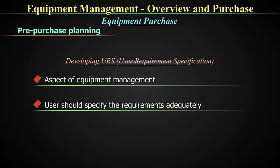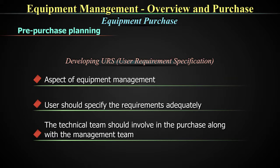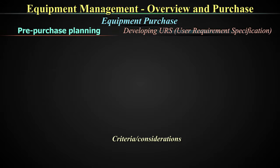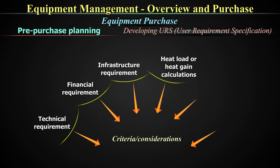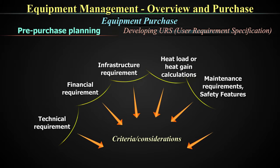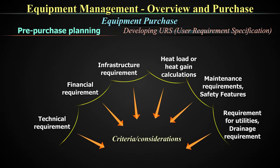How do you develop a URS or user requirement specification? Unless a user specifies requirements adequately, the optimization of its use is set to fail. It is imperative that the technical team of the lab is involved in this process. The relevant criteria when selecting and procuring laboratory equipment include technical, financial, infrastructure requirements, heat load or heat gain calculations, maintenance requirements and safety features, requirement for utilities, and drainage requirements.